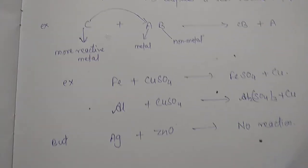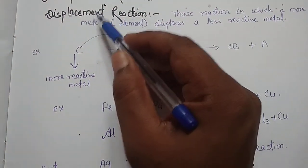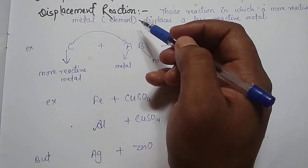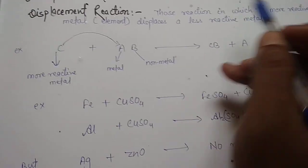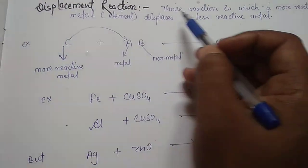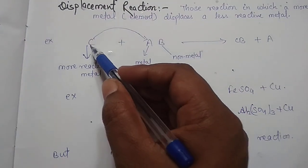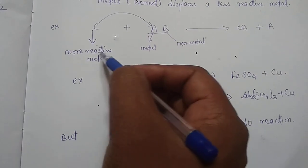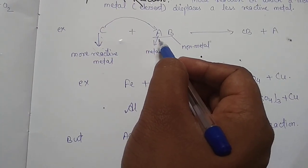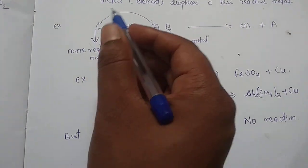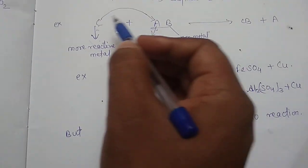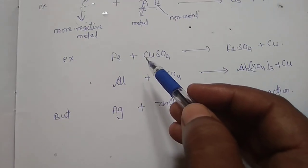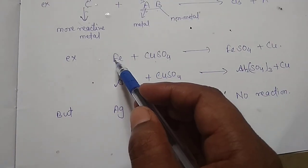Now, displacement reaction. Displacement means to remove. A highly reactive metal displaces a less reactive metal. Those reactions in which a more reactive metal or element displaces a less reactive metal are called displacement reactions. Symbolically, if C is a more reactive metal and AB is a compound, C displaces metal A and combines with B to give CB plus A. For example, iron plus copper sulphate — iron is more reactive than copper, so iron displaces copper from copper sulphate.